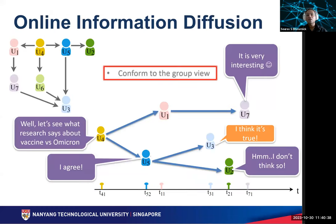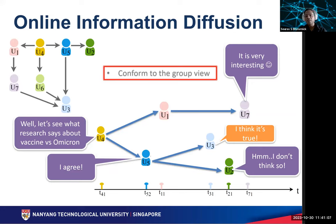For instance, social psychology theories such as conformity and confirmation bias often play an important role in online social diffusion. Consider the example of a social network involving several users, as shown in this slide. U4 initiates the spread of fake news related to the vaccine and Omicron. Users U1, U3, and U7 may exhibit a high degree of concern in the group and facilitate the spread, whereas U2 may exhibit non-conforming behavior and hence block the spread.